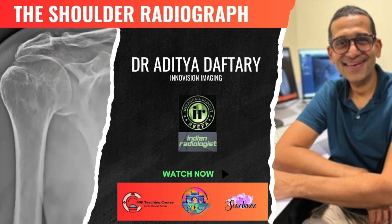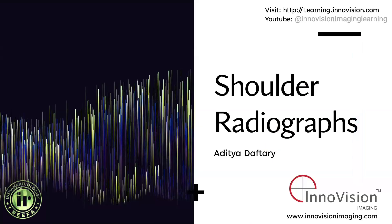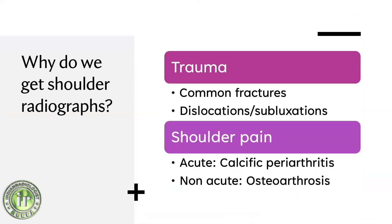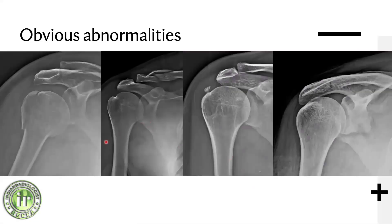This talk is on shoulder radiographs. We need to ask: why do we get shoulder radiographs, what are the common views, and what are common findings to look for? Most commonly we get them for trauma - we should know common fractures, dislocations, and subluxations. We should also identify causes of shoulder pain: acute causes include calcific periarthritis or calcific tendinosis, and non-acute causes include osteoarthritis.